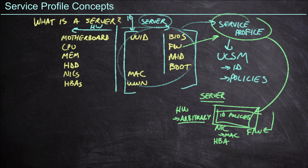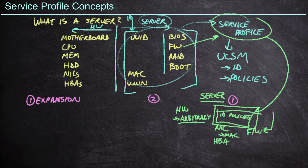Now, earlier on in this course we talked about three different scenarios where this really comes into play. If you want to see that conversation in more detail, be sure to go back and watch the skill called 'Describe UCS Architecture,' which is part of this DC Core course. Just to run through these scenarios, the first would be the idea of expansion. If I'm going to create a second server — server number one is already created, and I'm going to create a very similar server number two.